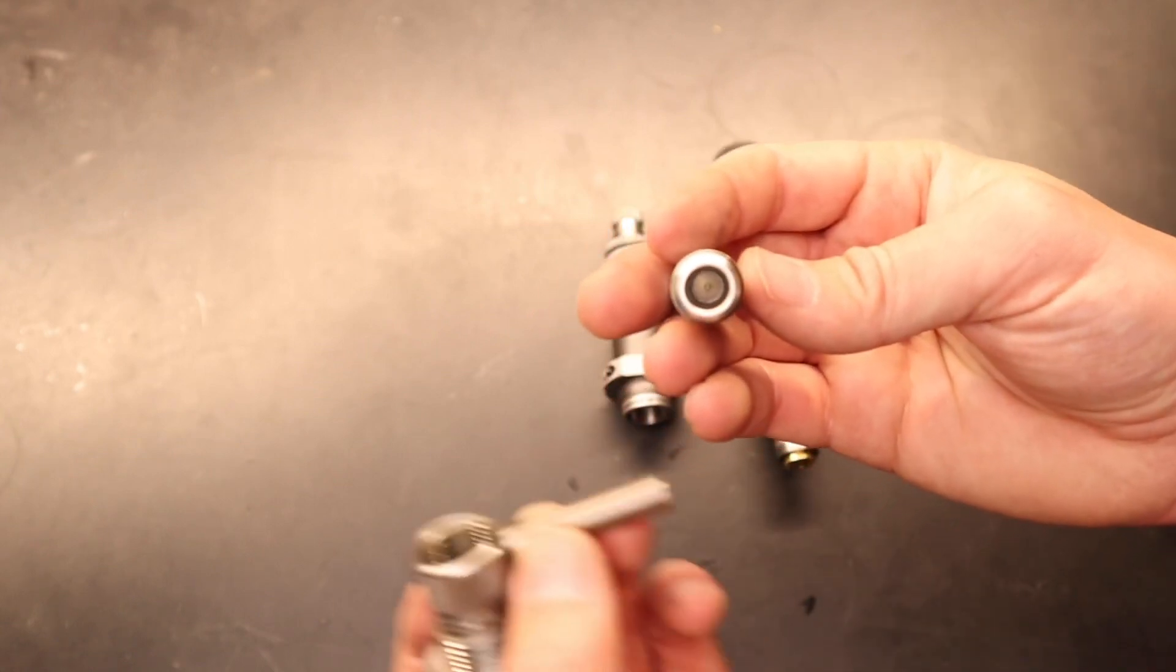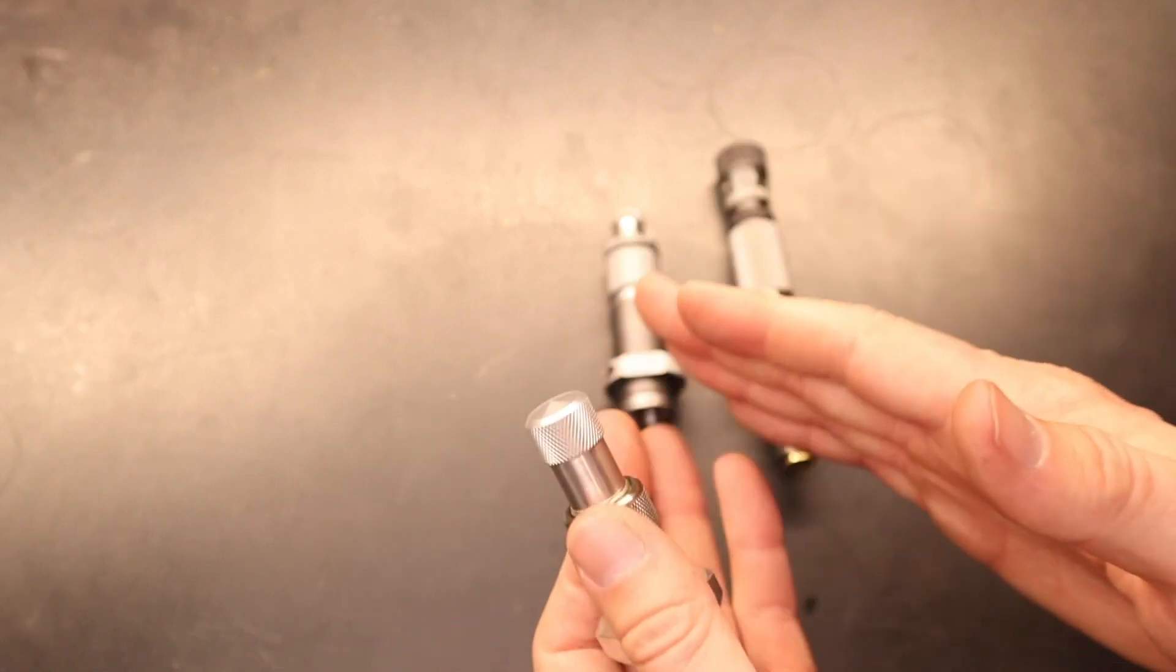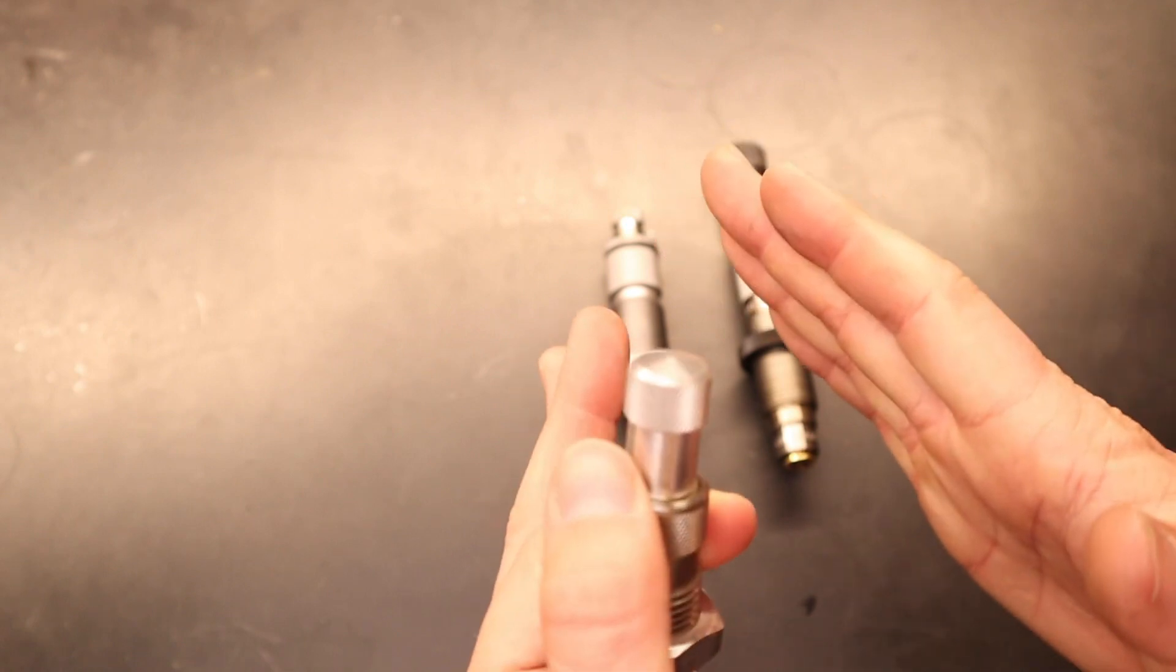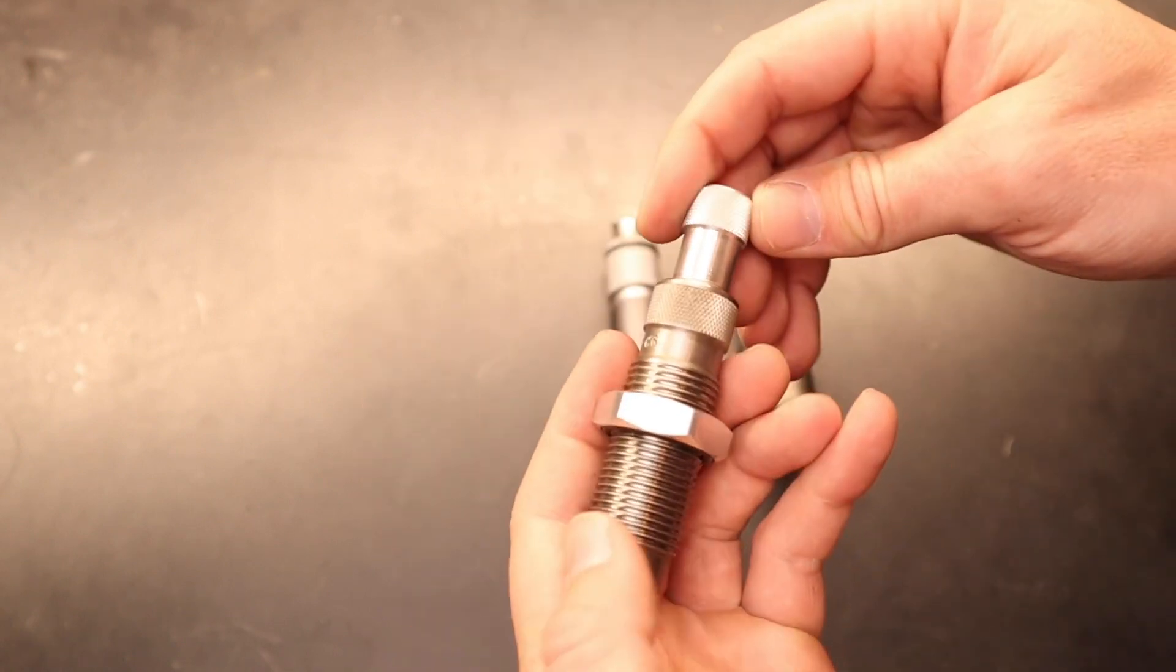Again, super simple design. This guy just drops down into this cap. It does move around a little bit to allow a bullet that is not being pushed into the die straight. If it comes in on an angle, it allows it to grab it and straighten it before it seats it all the way in.